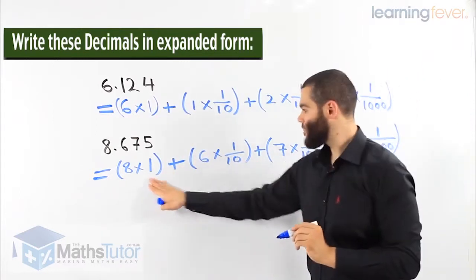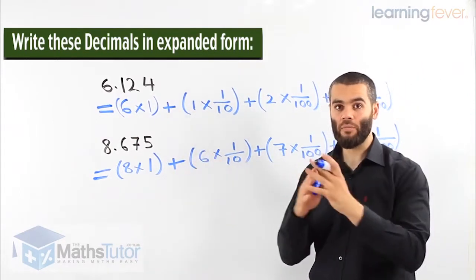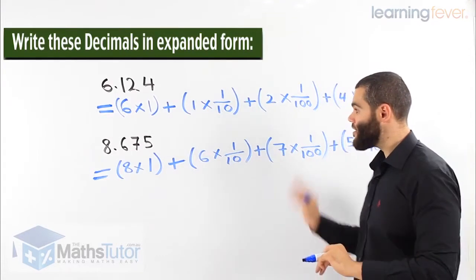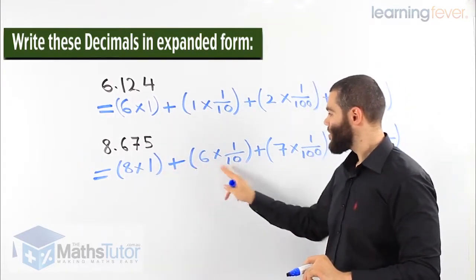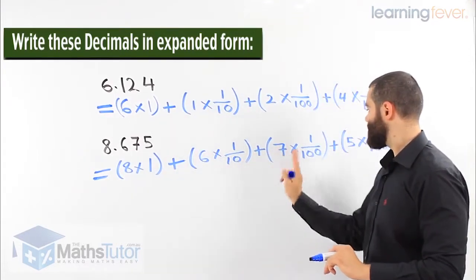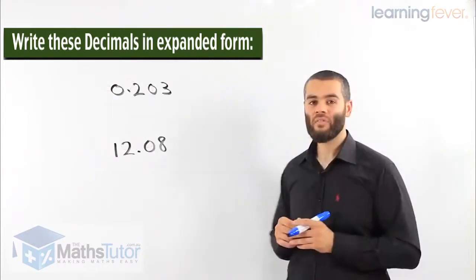So that's expanded form. And as you can see, expanded means it's going to be big. It's going to be large. It's expanded. So 8.675.